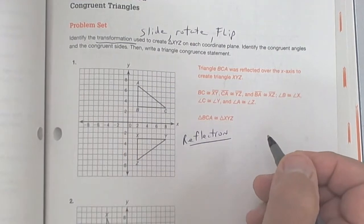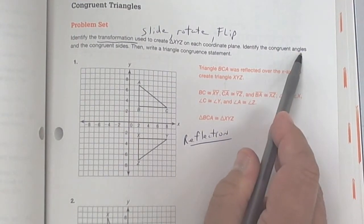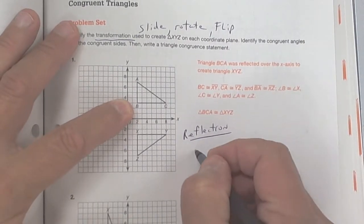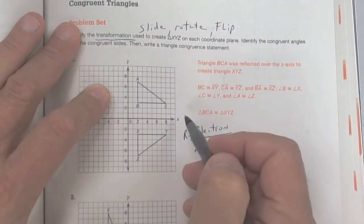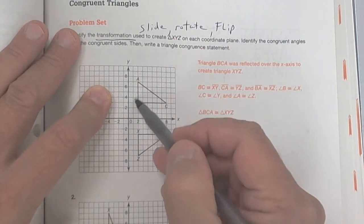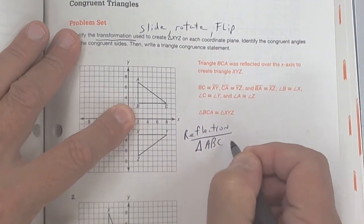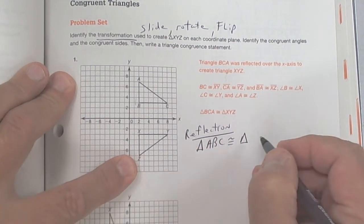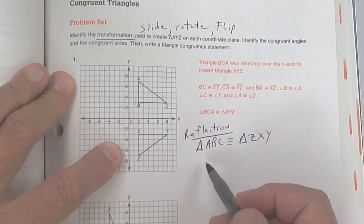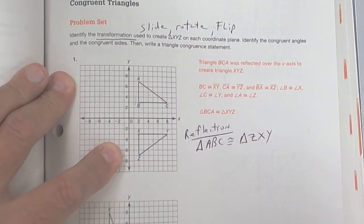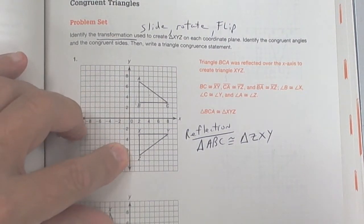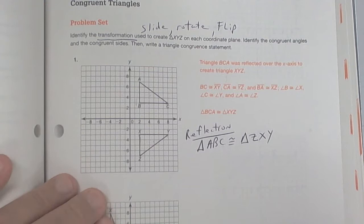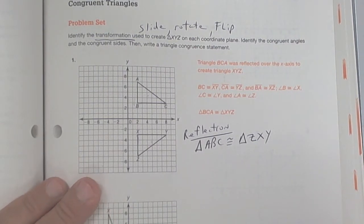Remember, reflection is a flip. They want you to identify the corresponding angles and write a congruent statement. I'll do the statement first: triangle ABC — I'm going short leg to long leg — is congruent to triangle ZXY. Make sure you do the same order for both triangles; it doesn't matter how you order the first one, but the second one has to match.